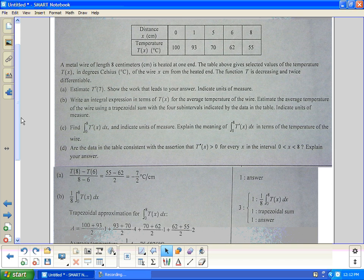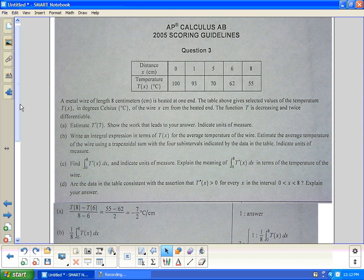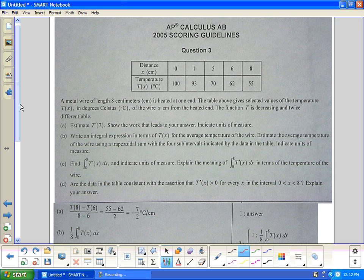Write an integral expression in terms of T(x) for the average temperature of the wire. Estimate the average temperature of the wire using a trapezoidal sum with four subintervals. First of all, you have to catch that you're asked to have an average temperature. If we're going to have an average, we're going to have to do this. And I suppose this time it's not F of T, it's T of x dx.